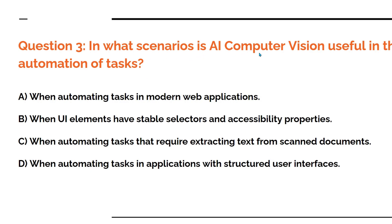Question three: in what scenarios is AI computer vision useful in automation tasks? Options: A) when automating tasks in modern web applications, B) when UI elements have stable selectors and accessibility properties — stable and accessibility means you go with UI automation, not AI computer vision, C) when automating tasks that require extracting text from scanned documents, D) when automating tasks in applications with structured user interfaces. Whenever the words 'structured' or 'stable' appear, you go with UI automation.